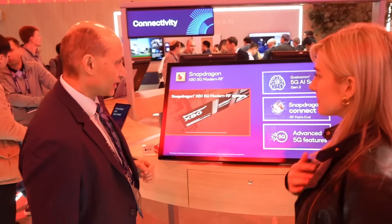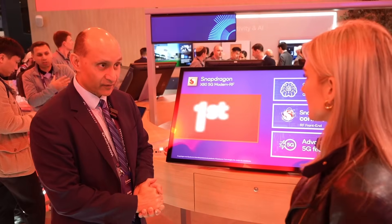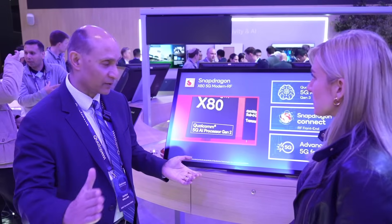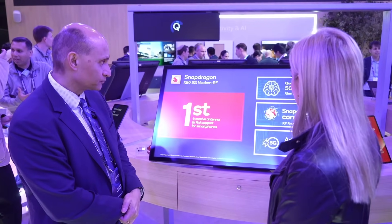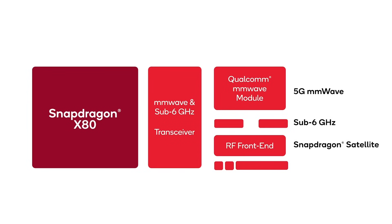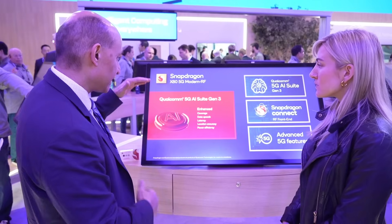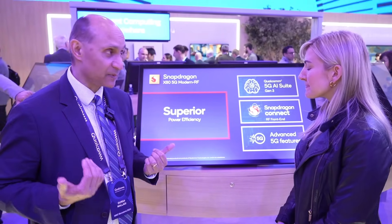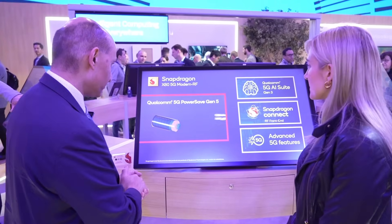The X80 5G modem RF platform is the latest in a series of modem RF platforms we've had. It has a ton of features. From a connectivity standpoint, we have 5G Advanced features — state-of-the-art carrier aggregation, integrated satellite communications capability, six receive antennas, and support for multiple aggregated carriers. This provides better coverage and better capacity for network operators. We've also been integrating AI into our 5G modem RF platforms.